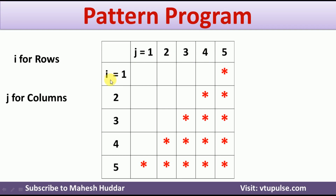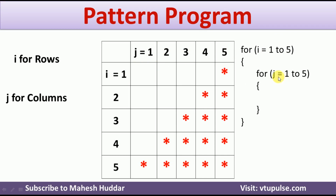I will be the looping variable for the rows and J will be the looping variable for the columns. Now we need to understand the possible values of I and J so that we can print this particular star pattern. The possible values of I will start from 1 to 5, so the outer loop will look like: for I equal to 1 to 5. The inner loop handling columns will also start from 1 to 5, so J equals 1 to 5. The question is: for what values of I and J should we print a star?